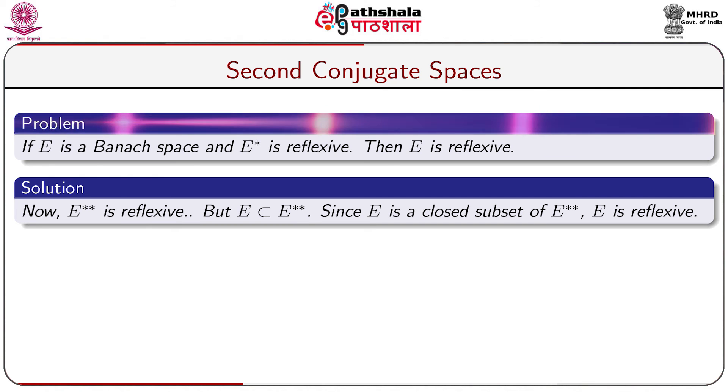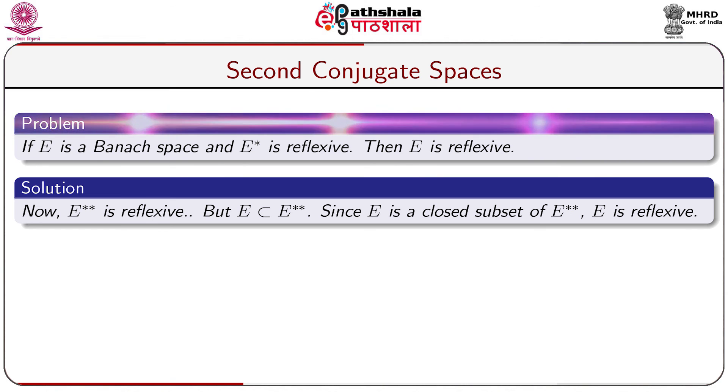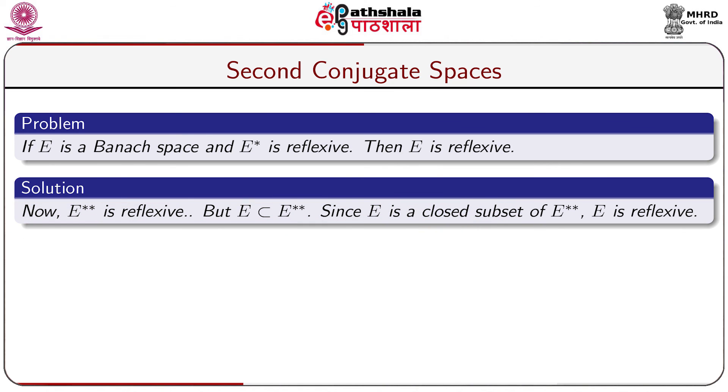Let us take a simple problem: if E is a Banach space and E* is reflexive, then E is reflexive. Now E** is reflexive, but E is a subset of E**. Since E is a closed subset of E**, it follows that E is reflexive. Up to this, in module 2 of chapter 8, we have been acquainted with the notion of conjugate spaces and second conjugate spaces, and we have learnt some basic properties on reflexivity of a normed linear space. With this we come to an end of module 2 of chapter 8.